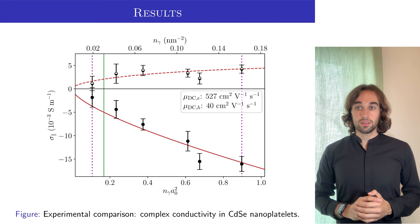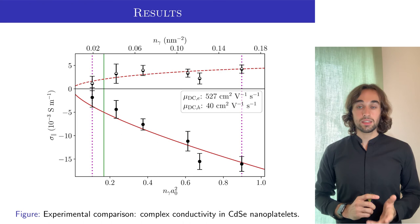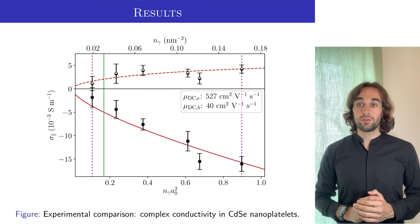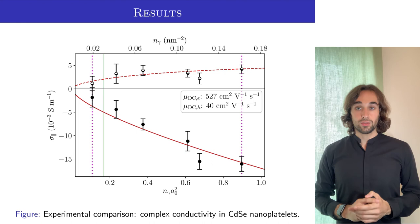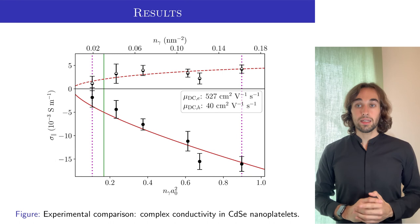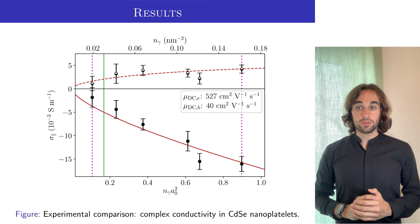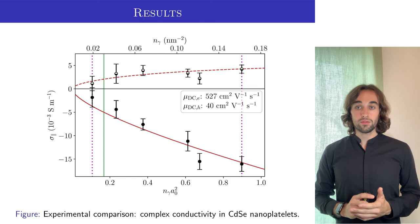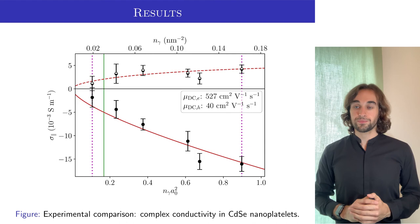This last figure is the summary of our results. We have in the x-axis, again, the photoexcitation density, and in the y-axis, we represent the complex conductivity, the real part as the positive values, and the imaginary part as the negative values. The dots correspond to the measured data, and the lines are our theoretical predictions. As you can see, the experimental data is reasonably well reproduced by our theory, and the values that we obtain for the mobilities, that are shown in the legend, can be compared against the literature, to see that we obtain something very reasonable for cadmium selenide. So we can say, in summary, that our theory works reasonably well for these experiments and these densities and temperatures.